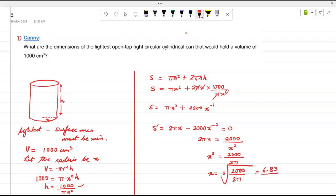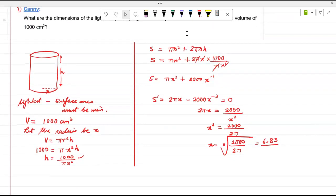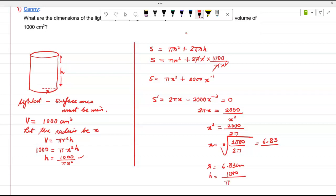So now you can find h. That is your radius. So what is the height being? So radius should be 6.83. So height is equal to 1000 divided by pi into answer squared.